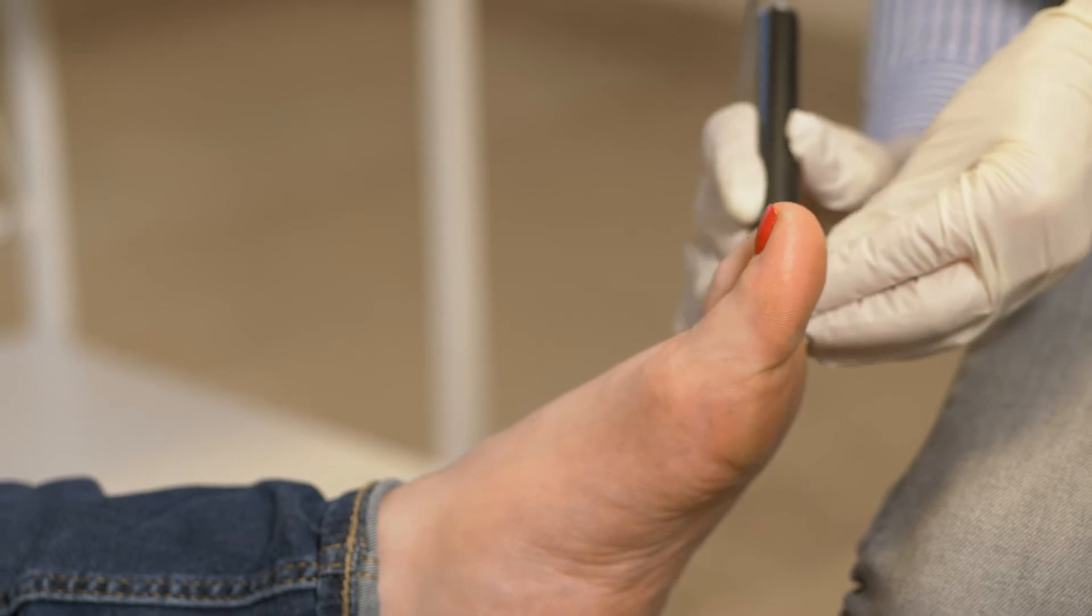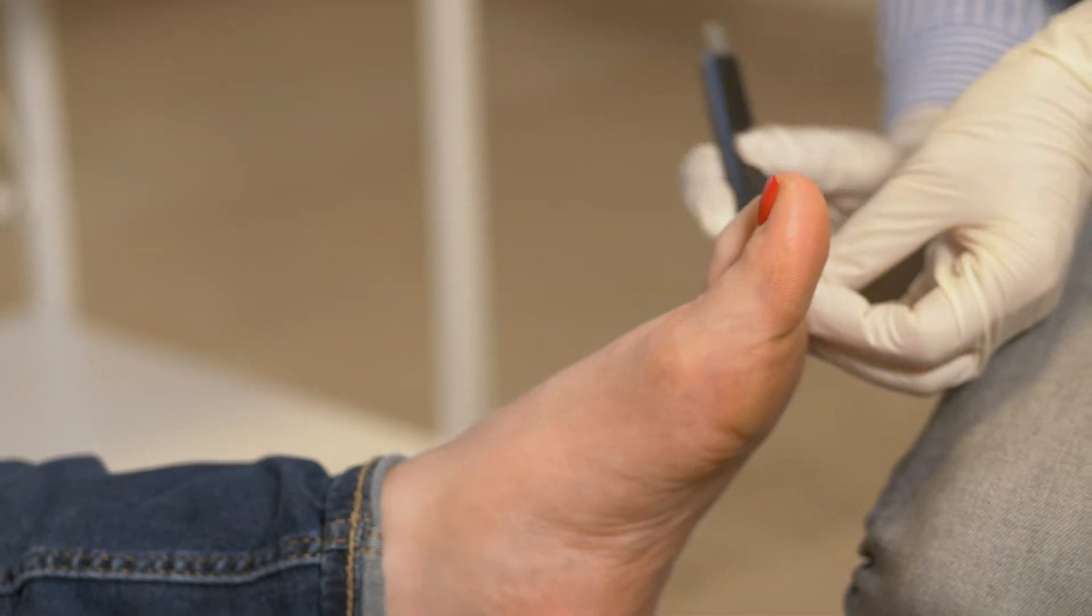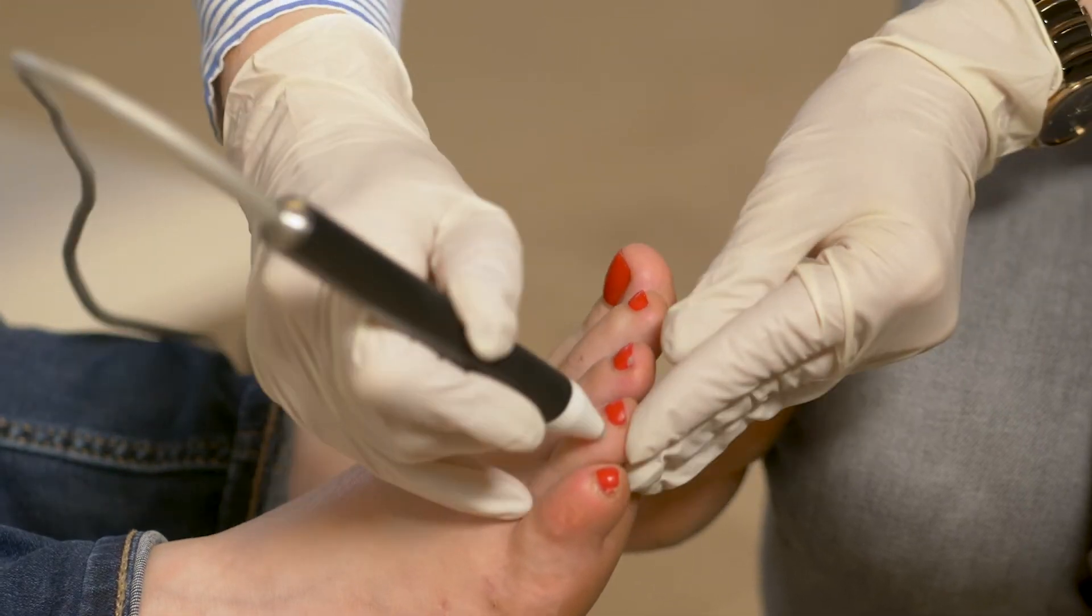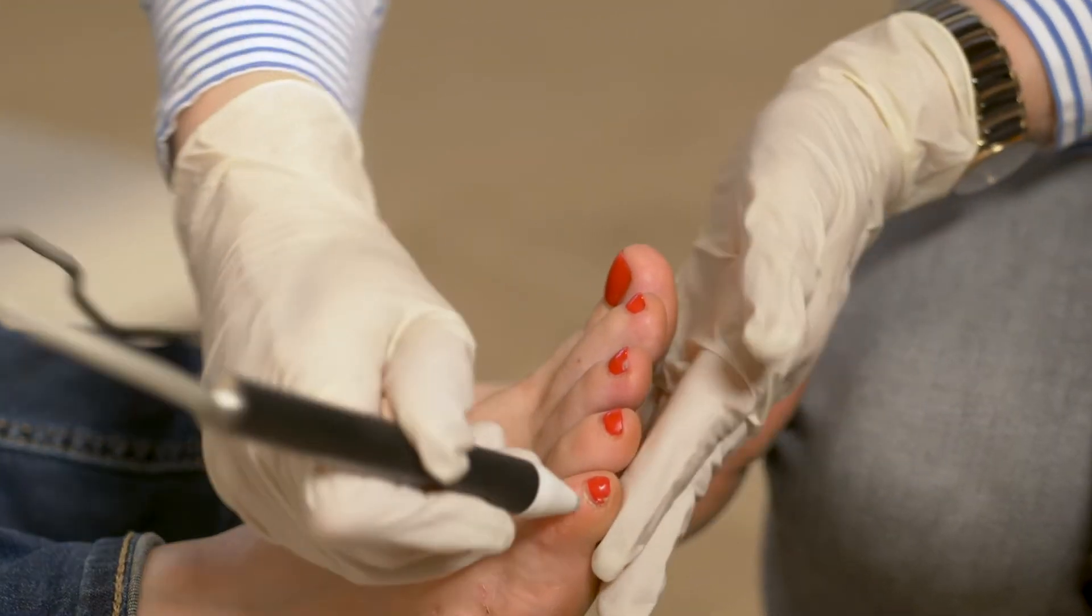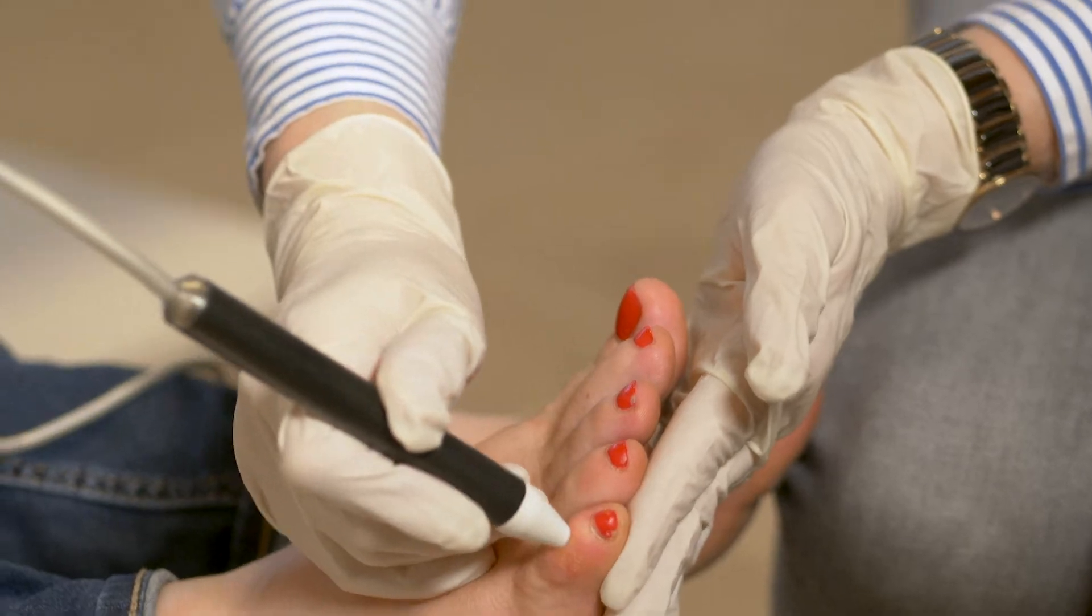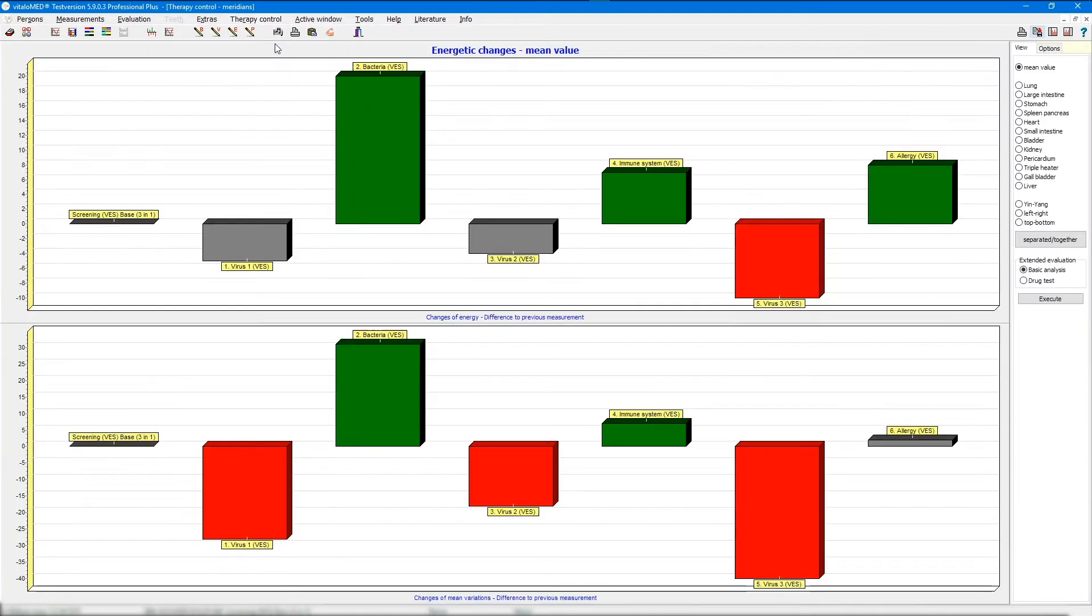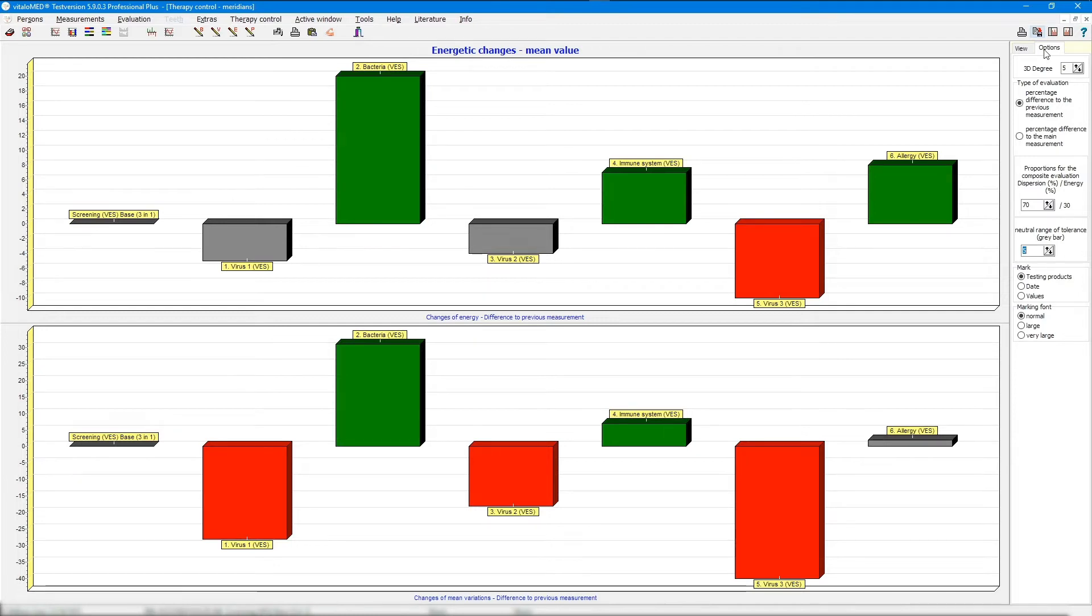For visualizing the results, click the button Therapy Control in the upper toolbar and select Therapy Control Meridian. For a better summary, click Options on the right-hand side and change proportions from 70% to 30% to 99% to 1%. Then click View and press the button separated together. This gives you an easy to interpret graphic.